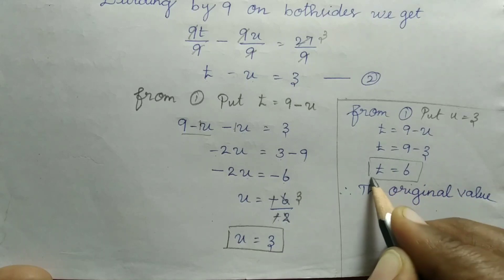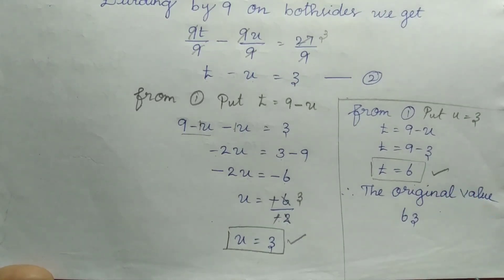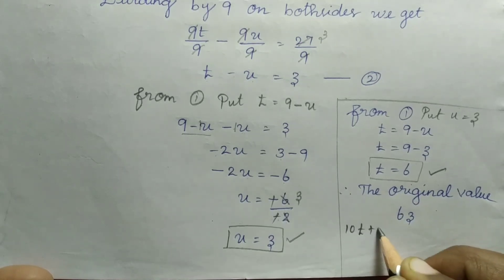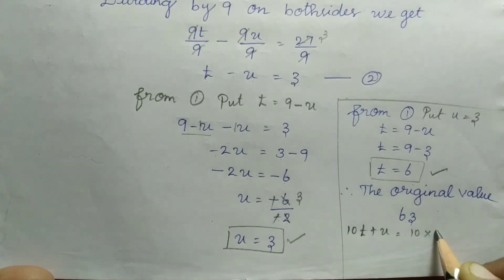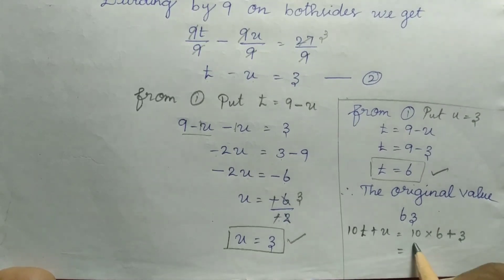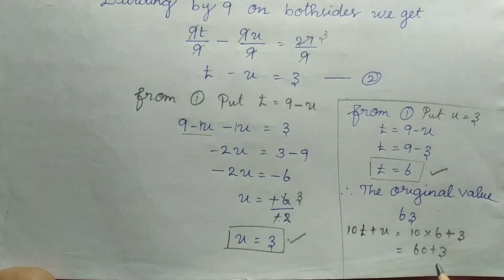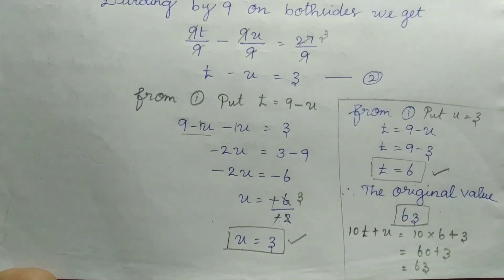Now find the original value. The original number is 10t plus u. t value is 6, u value is 3. So 10 into 6 is 60, plus 3, that is equal to 63. So the original value is 63.